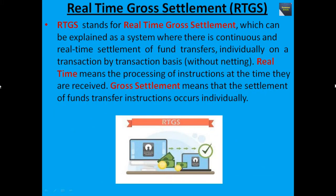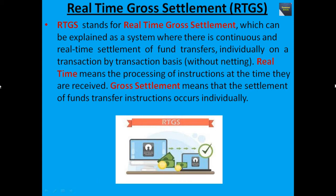Now we talk about real-time gross settlement, known as RTGS. RTGS stands for real-time gross settlement, which can be explained as a system where there is continuous and real-time settlement of fund transfers individually on a transaction-by-transaction basis without netting. Real-time means the processing of instructions at the time they are received. Gross settlement means that the settlement of fund transfer instructions occurs individually.